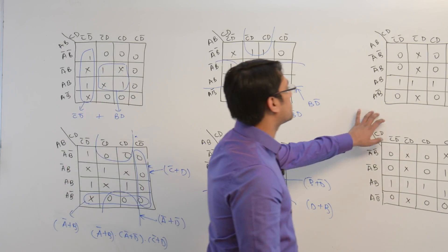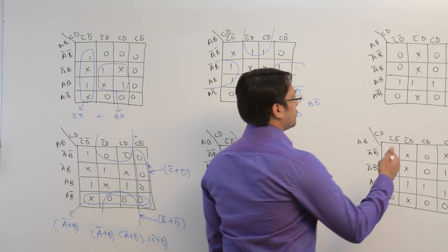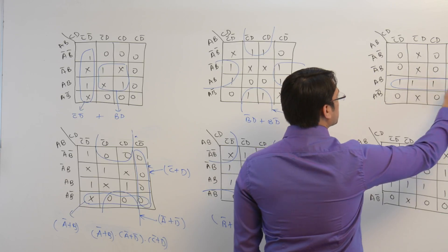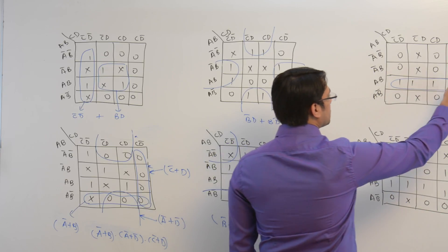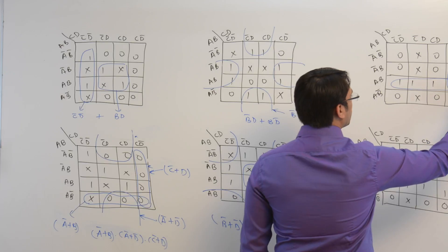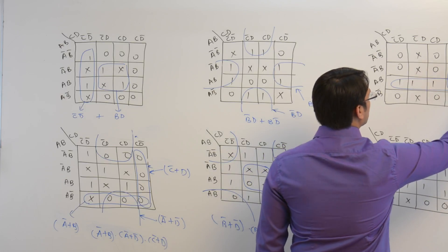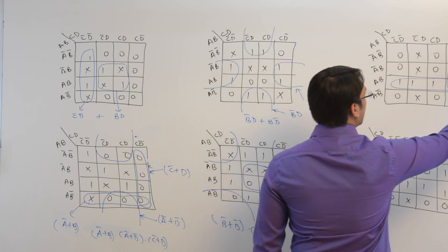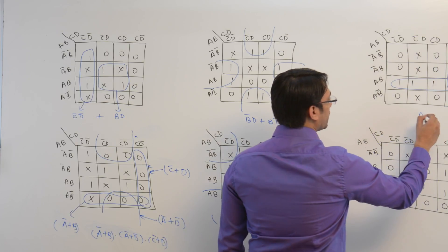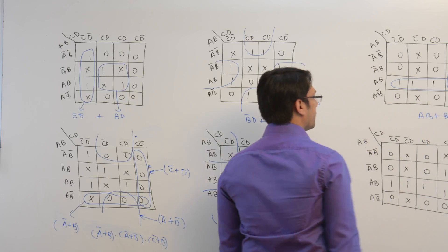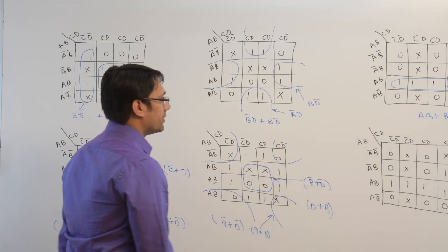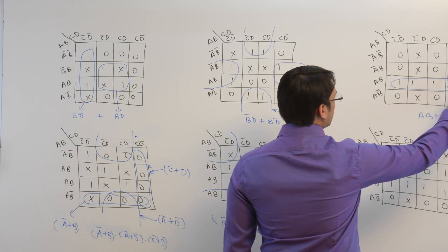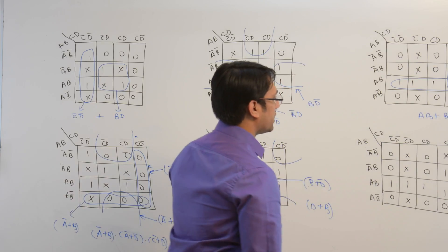Let us take the next K-map and find the SOP expression. We can make a subcube like this, another subcube like this, and also a subcube like this. This subcube is representing AB. This subcube is representing BCD complement. The solution will be AB plus BCD complement. There is no benefit of associating the don't care here because that will unnecessarily increase the size of the subcube.